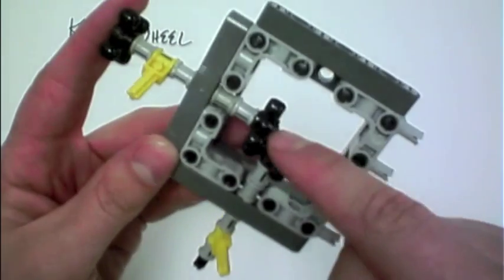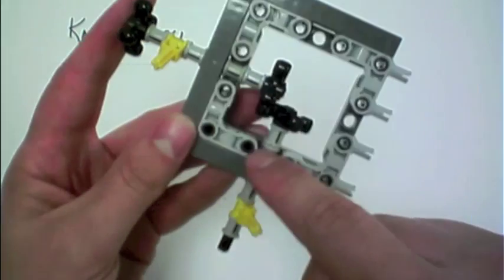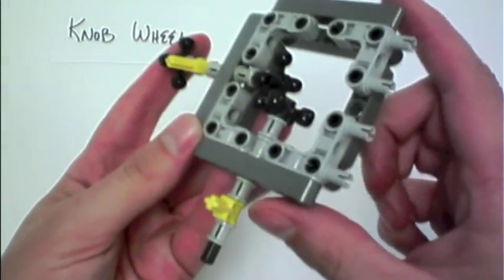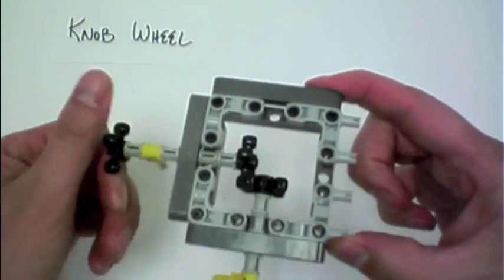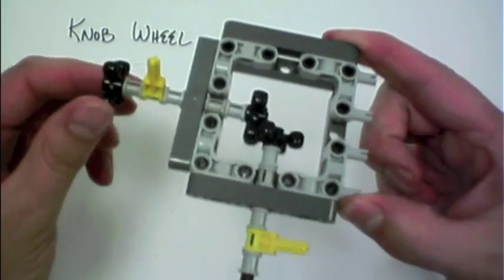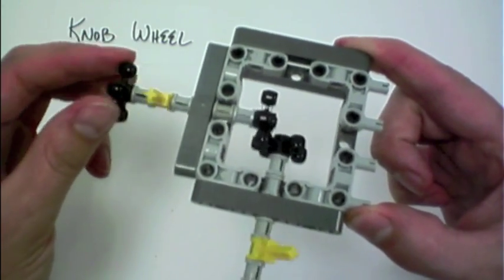But then also here, you can see I've positioned these two knob wheels 90 degrees to each other, and as you turn this, you can get a one-to-one relationship as they spin together.